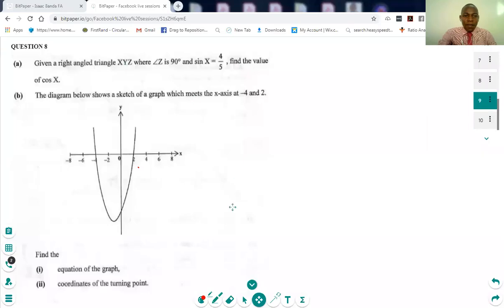Part B is going to be tackled in another recording. So we are given a right-angle triangle XYZ, where angle Z is 90 degrees and sin x is equal to 4 over 5. Find the value of cos x.